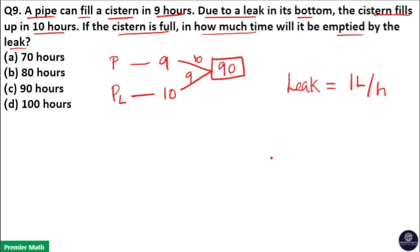In 1 hour, 1 liter is leaking. That means time taken to empty the cistern is: cistern capacity is 90 liters and leakage is 1 liter in 1 hour, so 90 divided by 1 equals 90 hours.